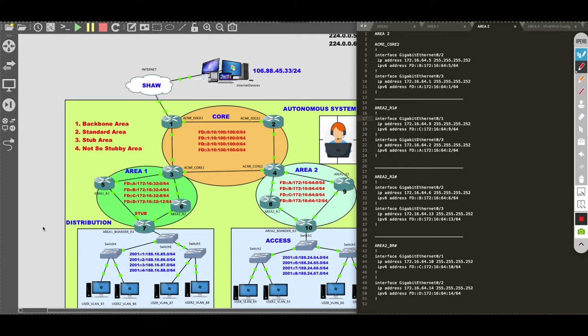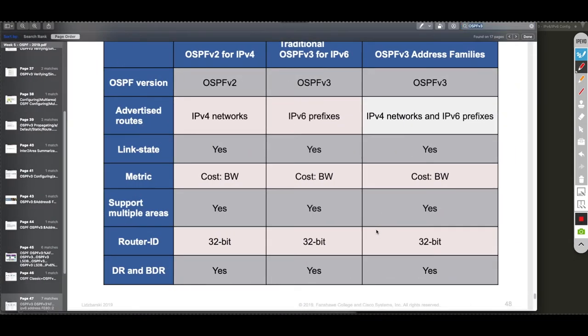I've just applied my configuration and have now primed the network to support any IGP protocol. But for the sake of this video, we'll be using OSPF version 3. Before I go into the OSPF version 3 configuration, I'd like to take a look at this chart, which I think is very important.